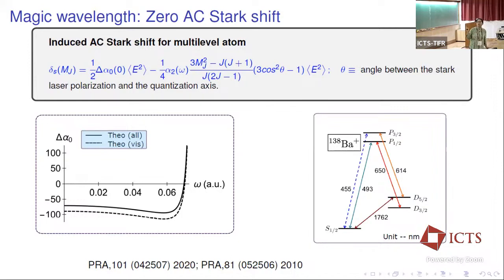Some further motivation: the blackbody radiation shift in the ion-based clock is proportional to the dynamic differential polarizability, which is quite large for barium — making it easy for us to measure the barium blackbody radiation shift with our experimental setup. Theoretically, it is predicted that the magic wavelength is around 653 nanometers. There is a discrepancy between two theoretical curves — one using all the theoretical model and one incorporating inputs from measurements of lower excited state lifetimes and transition strengths. To pin down this discrepancy, we need to measure this magic frequency.